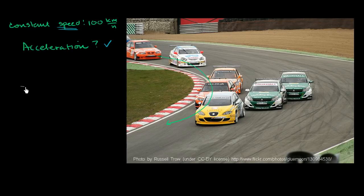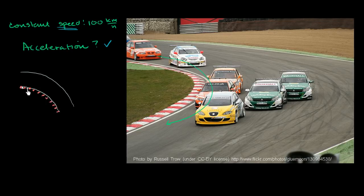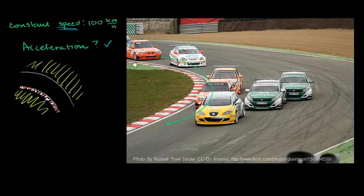So if I were to take a top view of this racetrack, I'll do my best attempt to draw it. It might look something like this — this is the top view, with the red and white markings. There's some grass out here on both sides. Let's focus on this orange car — this red car right over here. This is its path, and we're saying it has a constant speed of 100 kilometers per hour.